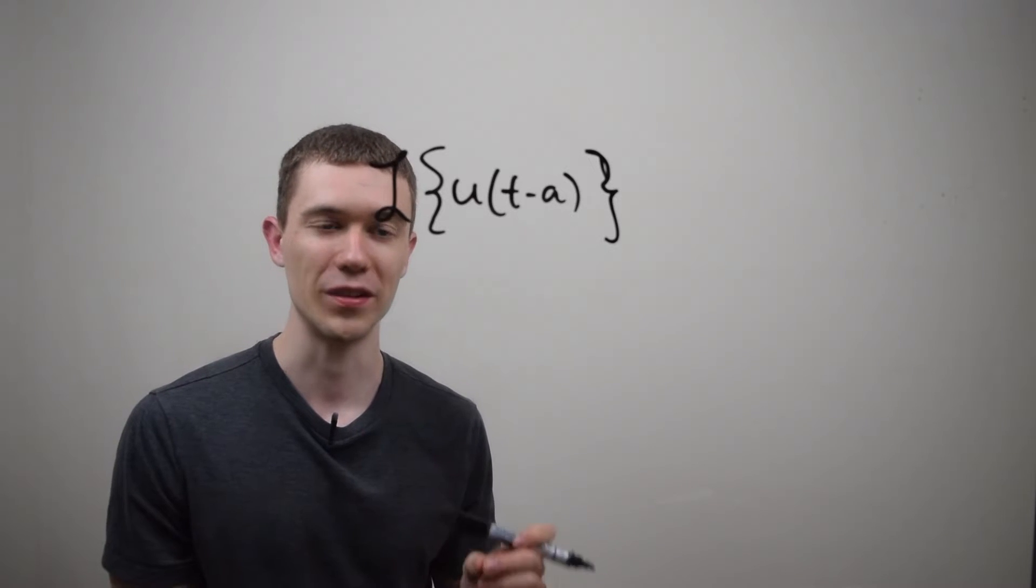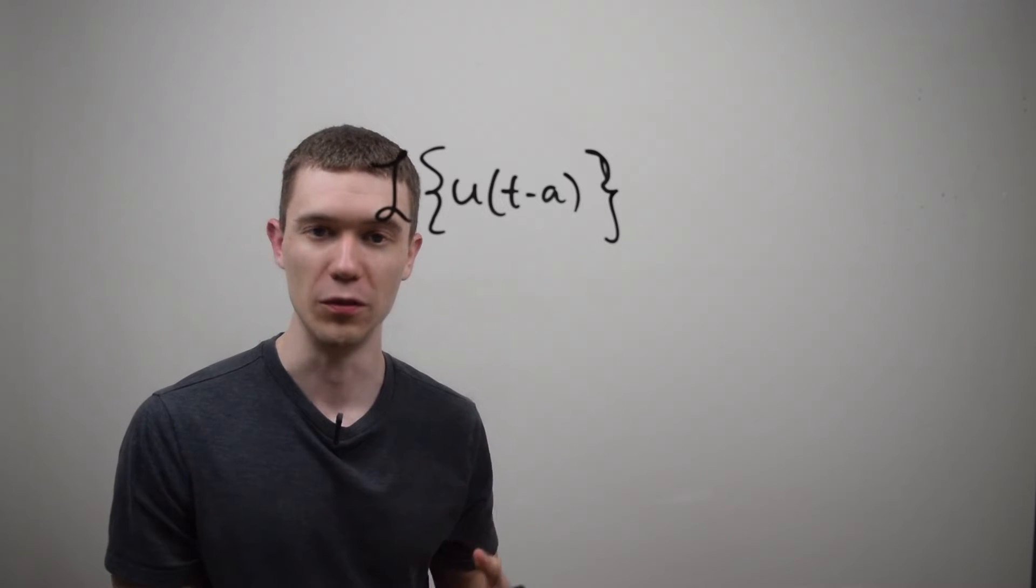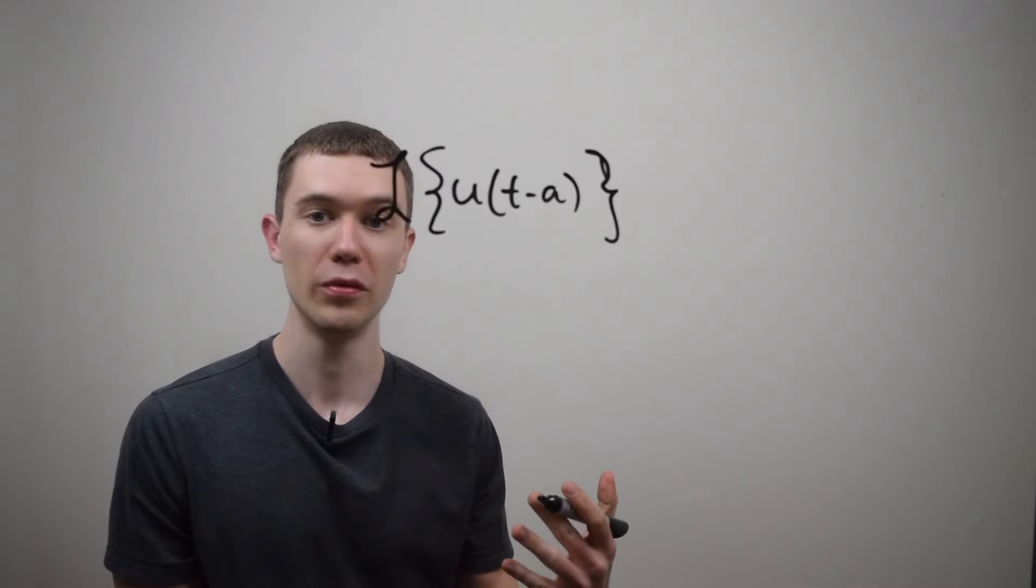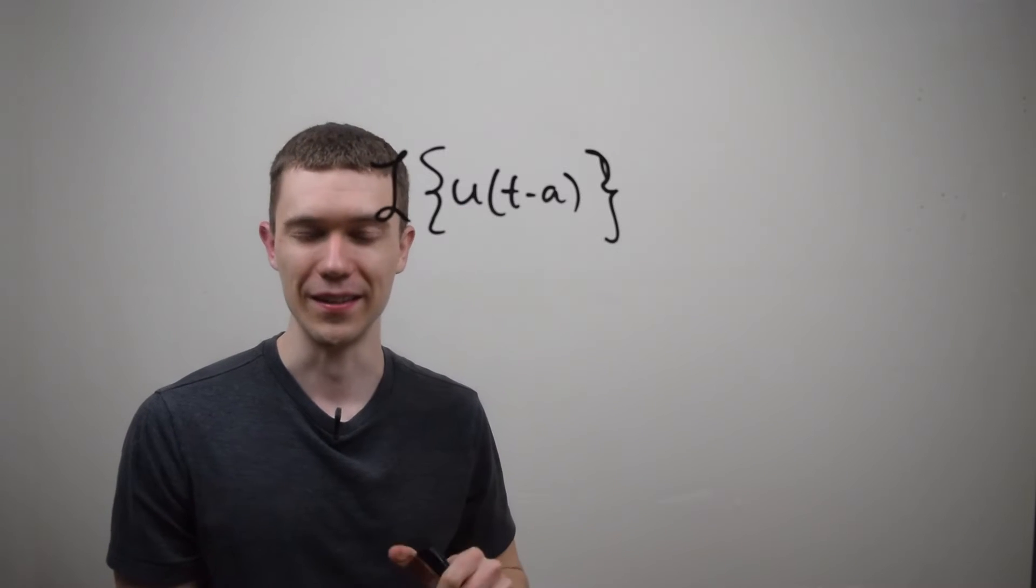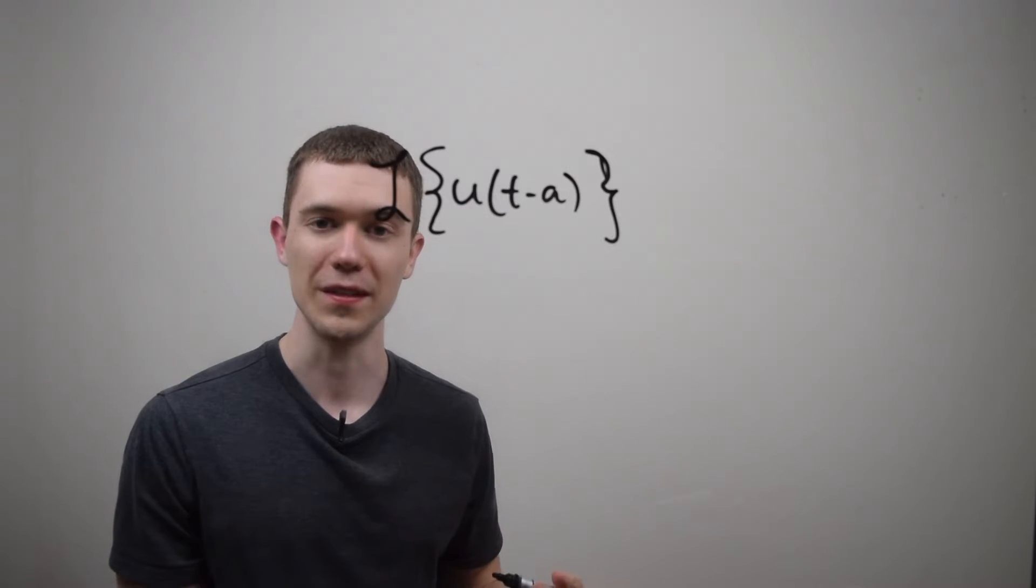So if you haven't seen what a step function is, it looks something like this. For whatever reason we usually use the letter u to represent it. And you might also see it written u sub a instead of u of t minus a, but this means the same thing.